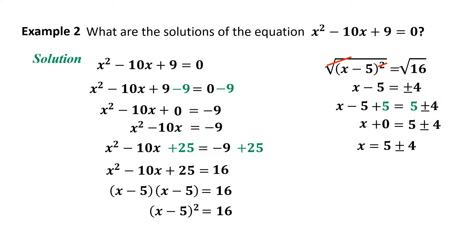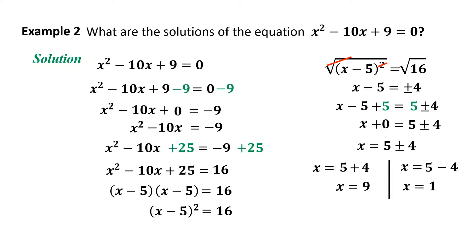Since we are looking for x, transpose -5 to the other side by adding its inverse +5 to both sides. We get x = 5 ± 4. Separating into two equations: x = 5 + 4 = 9, and x = 5 - 4 = 1.